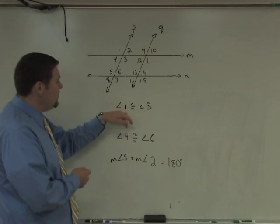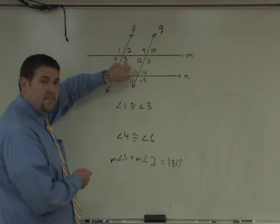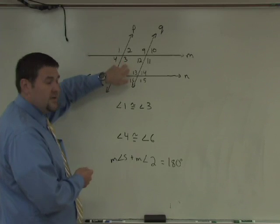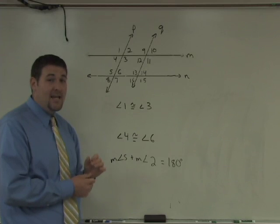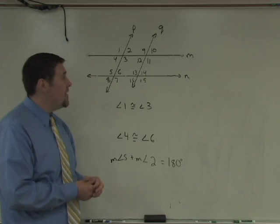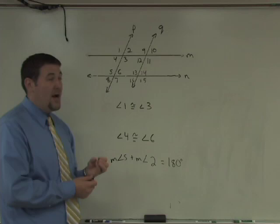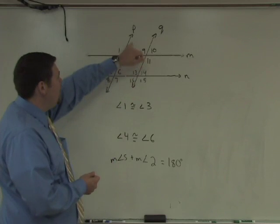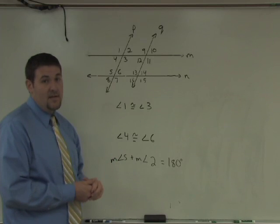This first one says that angle one is congruent to angle three. Those two are vertical angles. Just knowing that vertical angles are congruent is not enough information to know that lines are parallel. So I can make no conclusions about lines M and N or P and Q. The only thing I really can say is that line P intersects line M, which has nothing to do with parallel lines.